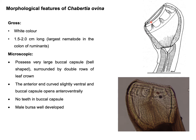Microscopic features include a very large buccal capsule that is bell-shaped and surrounded by double rows of leaf crowns. The anterior portion of this parasite is slightly ventral, and the buccal capsule opens anteroventrally. This parasite does not have any teeth in the buccal capsule, and the male bursa is well developed.